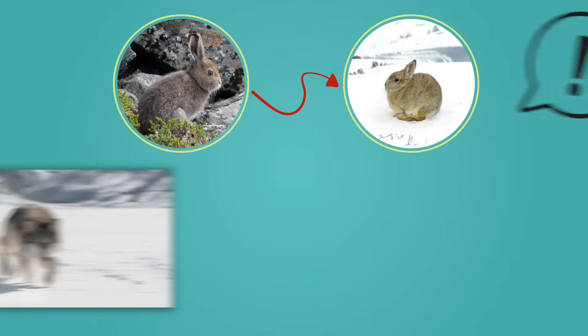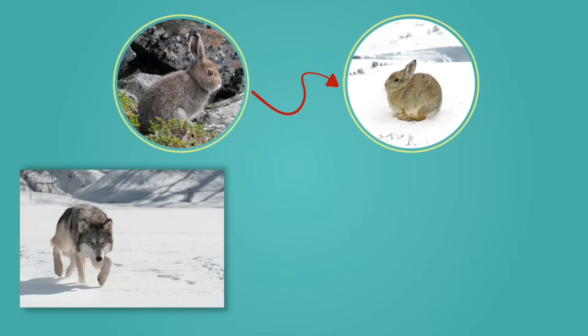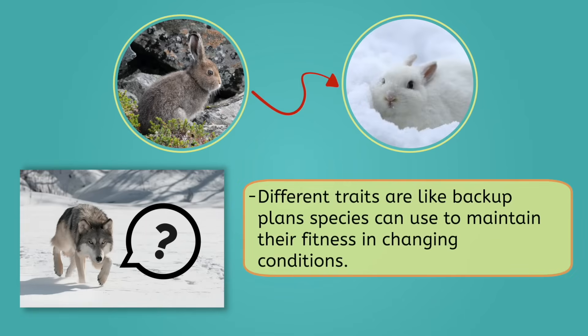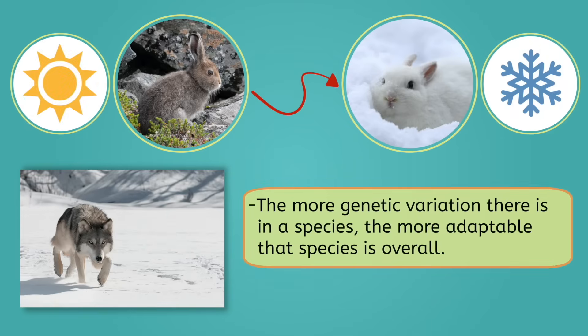This brings us back to genetic diversity. Before the industrial revolution, the light color variation was clearly better suited for the environment than the dark color variation. However, if the dark color variation had never existed, the entire population of moths would have been unable to blend into the trees when the environment changed. In this way, the different variations of traits are like an insurance for a species. If the landscape or weather changes, or a new species migrates into an area and disrupts the environment, different traits are like backup plans species can use to maintain their fitness in changing conditions. The more genetic variation there is in a species, the more adaptable that species is overall.